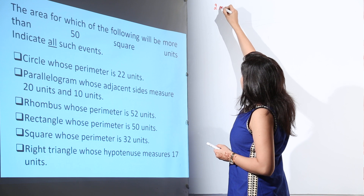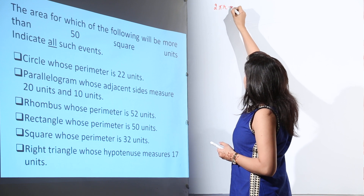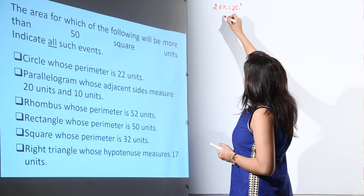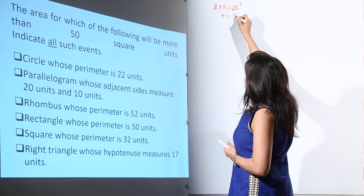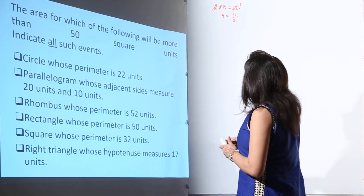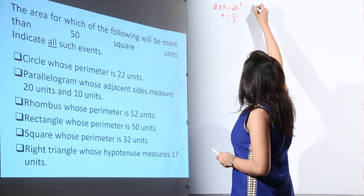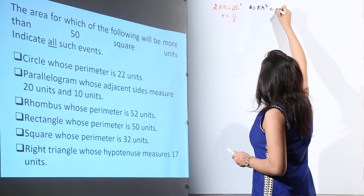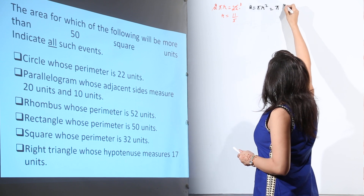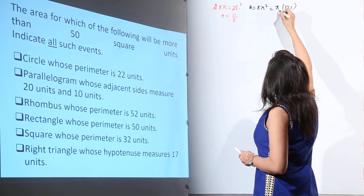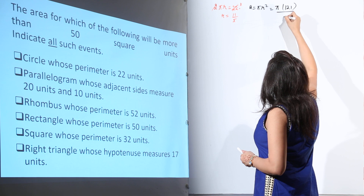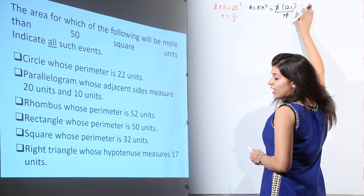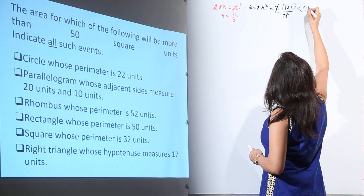We know that perimeter is 2πr = 22 units. That means πr = 11, and r = 11/π. To calculate the area: πr² = π × (121/π²) = 121/π. This value will be less than 50.